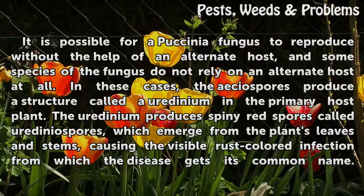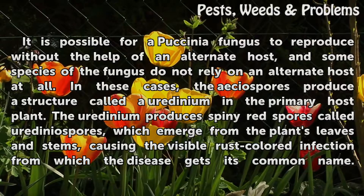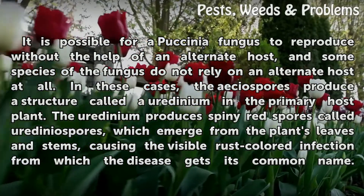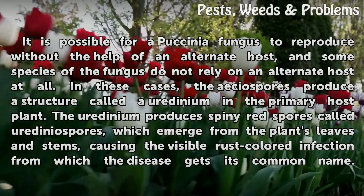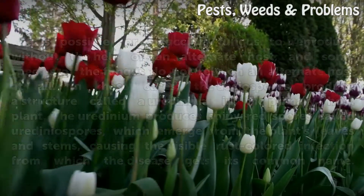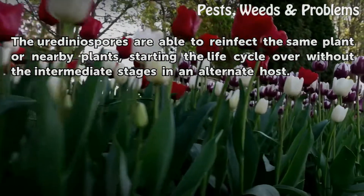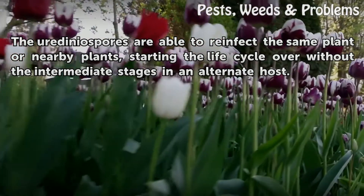It is possible for a Vaxenia fungus to reproduce without the help of an alternate host, and some species of the fungus do not rely on an alternate host at all. In these cases, the eesiospores produce a structure called a uridinium in the primary host plant. The uridinium produces spiny red spores called uridinium spores, which emerge from the plant's leaves and stems, causing the visible rust-colored infection from which the disease gets its common name. The uridinium spores are able to re-infect the same plant or nearby plants, starting the life cycle over without the intermediate stages in an alternate host.